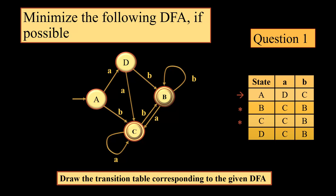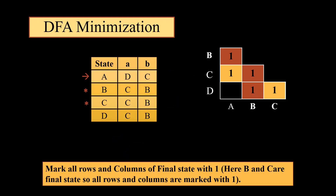Consider this example. In this we have four states. A is the start state and B, C are two final states. The table is given on the right side. We have two inputs, that means sigma is {A, B}. Corresponding to this we have a table on the right side with one start state and two final states.